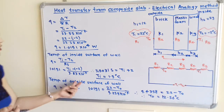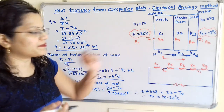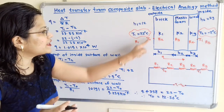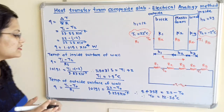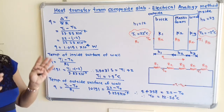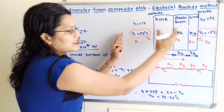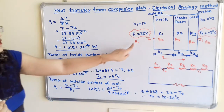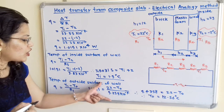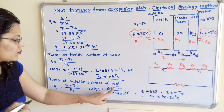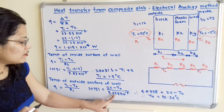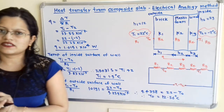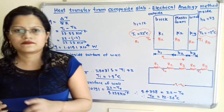For the outside surface temperature T0: heat transfer between the outside fluid (T1 = 22°C) and the outside wall (T0) involves only R1. Using Q = (T1 − T0) / R1: 10191 = (22 − T0) / (9.259 × 10⁻⁴). Solving gives T0 = 12.56°C. This is the answer to the third question.